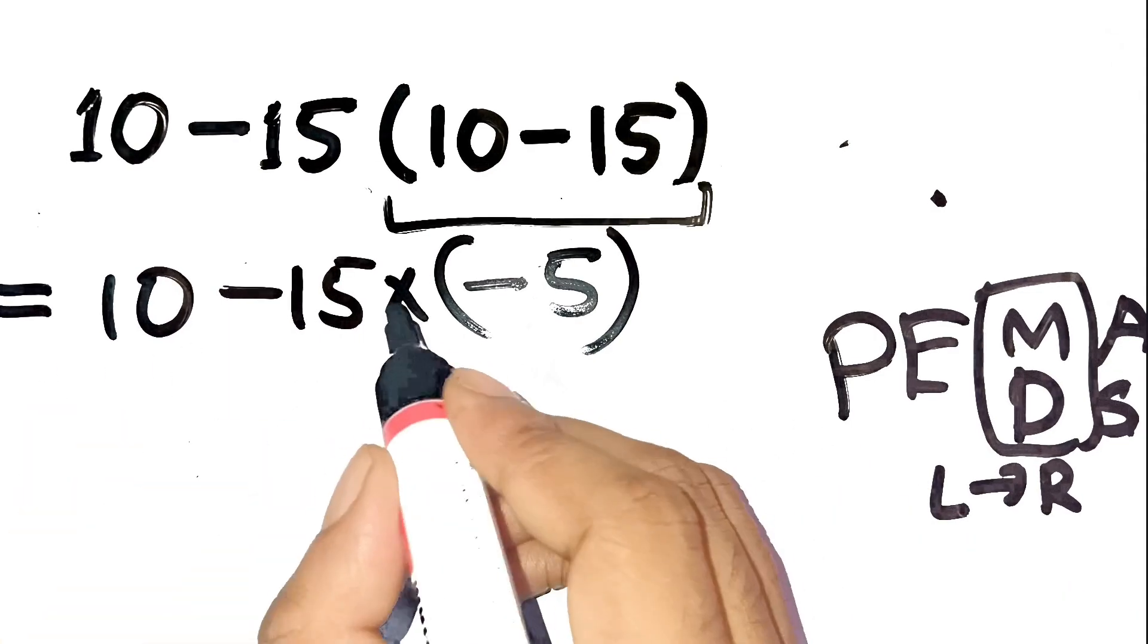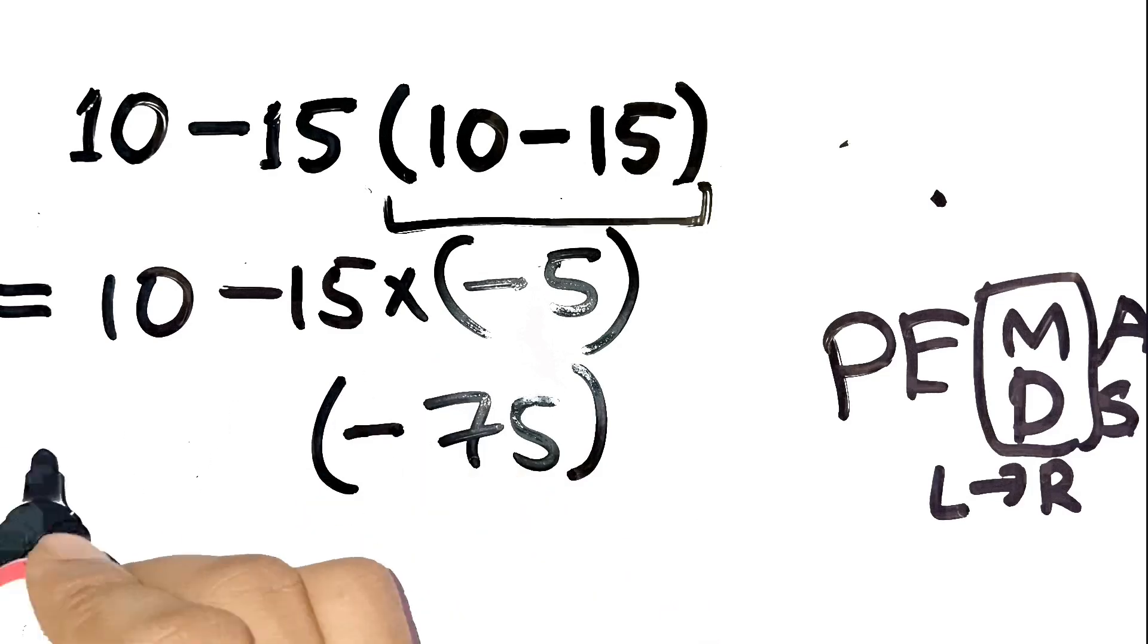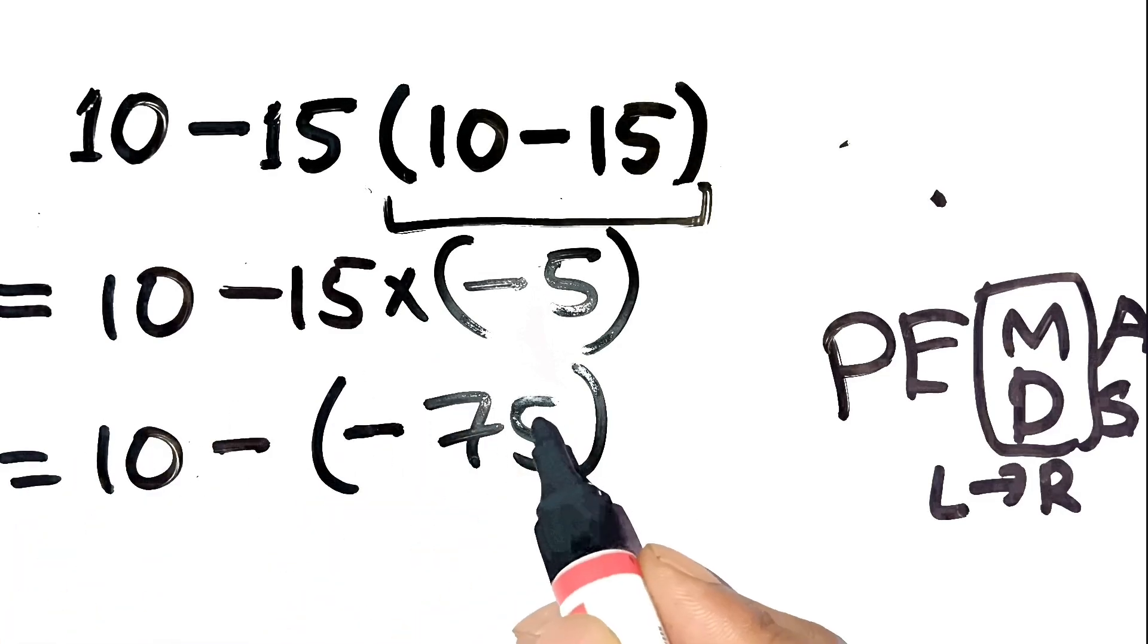Next, multiplication. 15 times negative 5 equals negative 75. Now the expression is 10 minus negative 75.